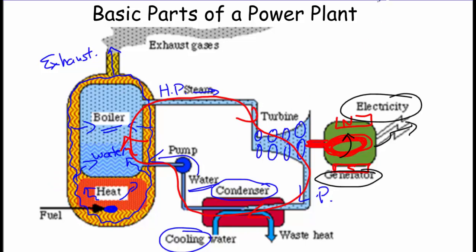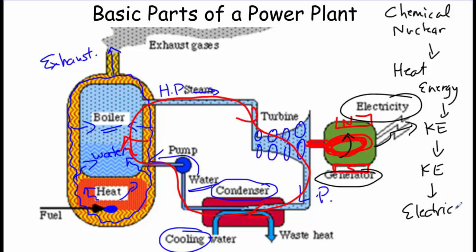So overall, we start out with some chemical or nuclear energy stored in the fuel. That gets converted into heat energy in the boiler. This makes steam, and the steam has a lot of kinetic energy. It pushes the turbines, so their movement would be another form of kinetic energy. And then we finally output the electrical energy. This initial form of energy is called the primary energy, and this final form of energy is called the secondary form of energy.